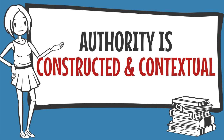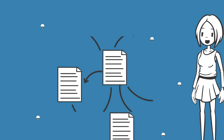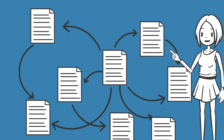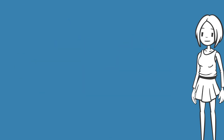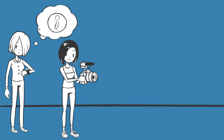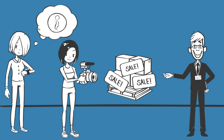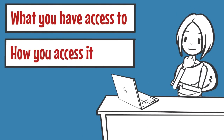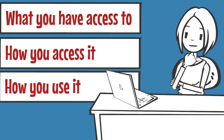Authority is constructed and contextual. It is important to know how to find and use information well in a variety of contexts. Recognizing when you need information and understanding how it is produced, valued, and disseminated will influence what you have access to, how you access it, and how you use it.